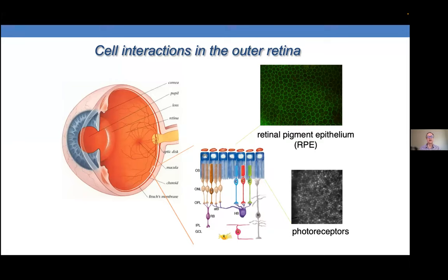Specifically we've studied the phagocytosis of outer segment tips by the RPE to support regeneration of the outer segments, and also metabolic interactions between the RPE and photoreceptors, and the effect of metabolic perturbations on the RPE's phenotype and consequences for photoreceptors. We use naturally occurring mutations and variants as well as induced mutations in mice to understand basic homeostatic mechanisms and how they are perturbed in photoreceptor degenerations such as retinitis pigmentosa and age-related macular degeneration.